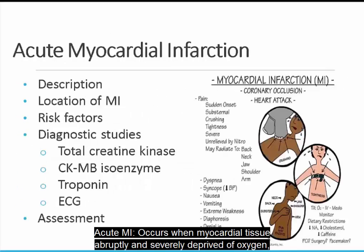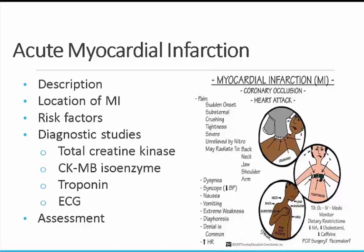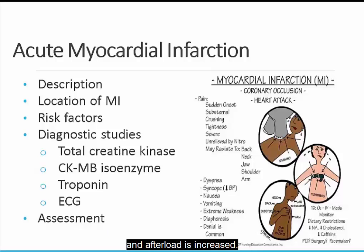Acute MI occurs when myocardial tissue is abruptly and severely deprived of oxygen, leading to necrosis; infarction develops over several hours. Myocardial infarction is a major cause of direct pump failure. With an MI, cardiac output and mean arterial pressure are decreased and afterload is increased.